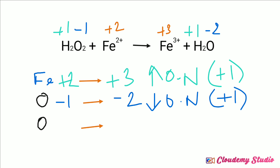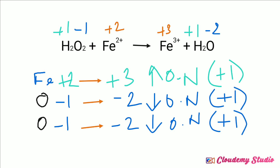In this reaction, we have two oxygen atoms on the left hand side. Therefore, we need to write the decrease in oxidation number for oxygen one more time. The oxidation number changes from minus 1 to minus 2, there is a decrease in oxidation number, and the decrease is plus 1. So the total decrease in oxidation number for oxygen is plus 1 plus plus 1, which together equals plus 2.